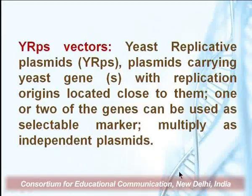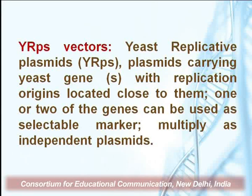YRPs, or yeast replicative plasmids, are plasmids carrying yeast genes with replication origins located close to them. One or two genes can be used as selectable markers, and they multiply as independent plasmids. YRPs have the possibility of integrating into the chromosome but also of replicating separately. They contain selectable marker genes and also contain a single or multiple origin of replication so that they can replicate inside the yeast host cells.